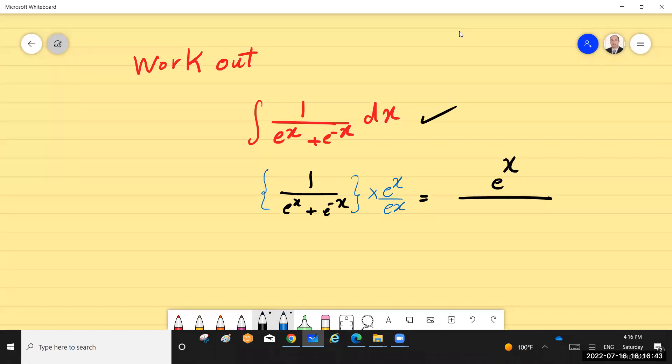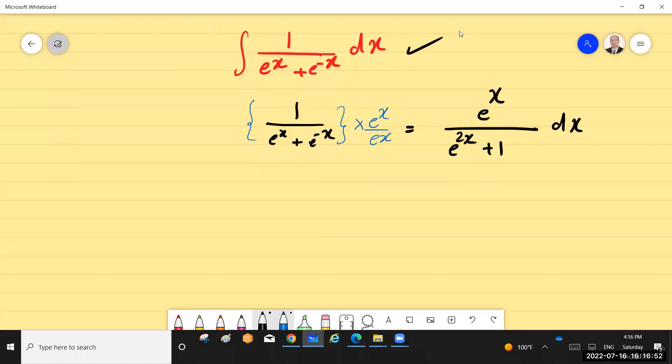x over e to the 2x plus 1 dx. And I can rewrite this in the form of e to the x over (e to the x)² plus 1 dx. Now if you let e...